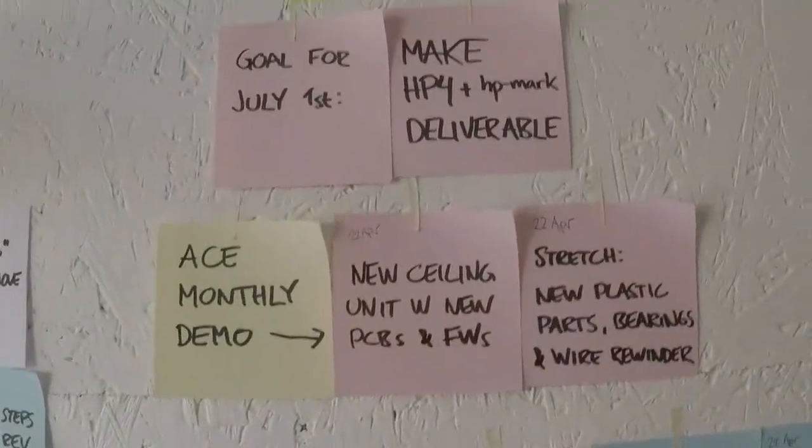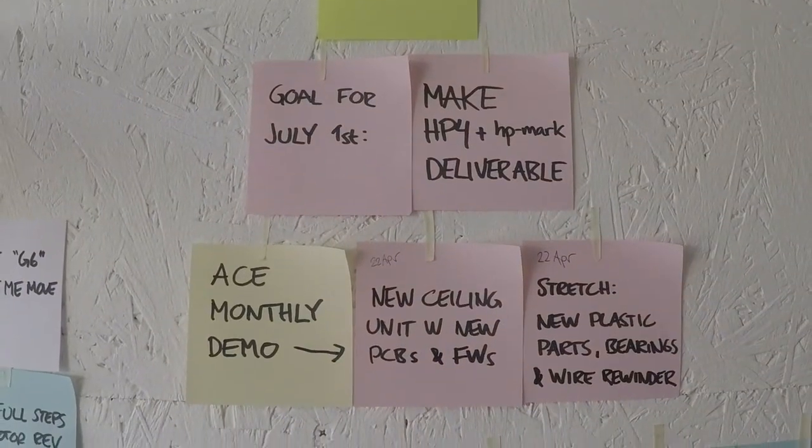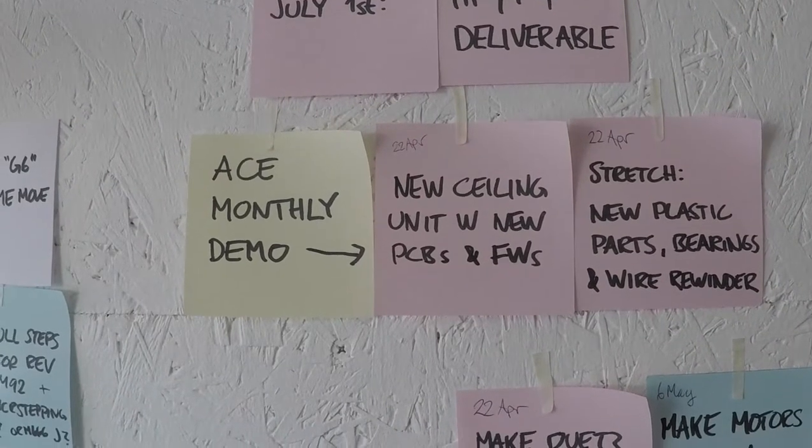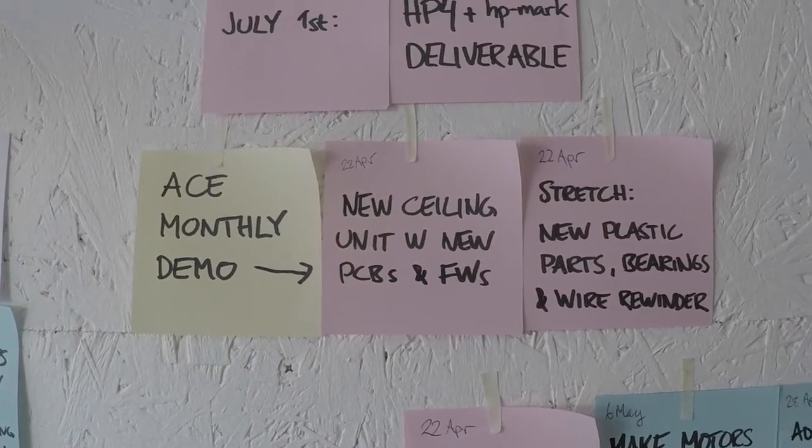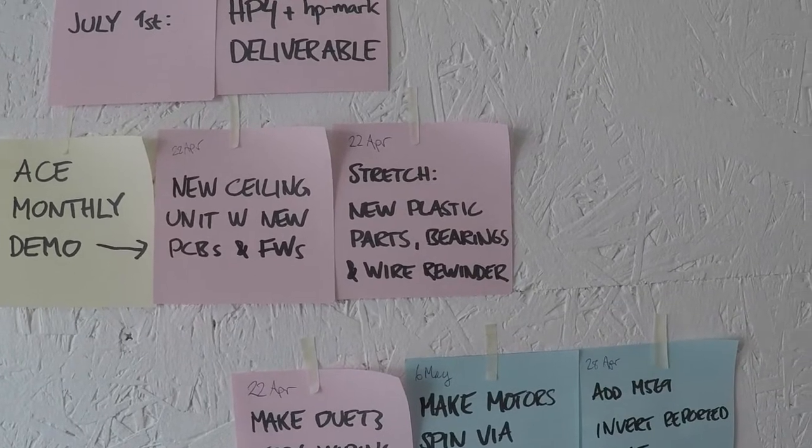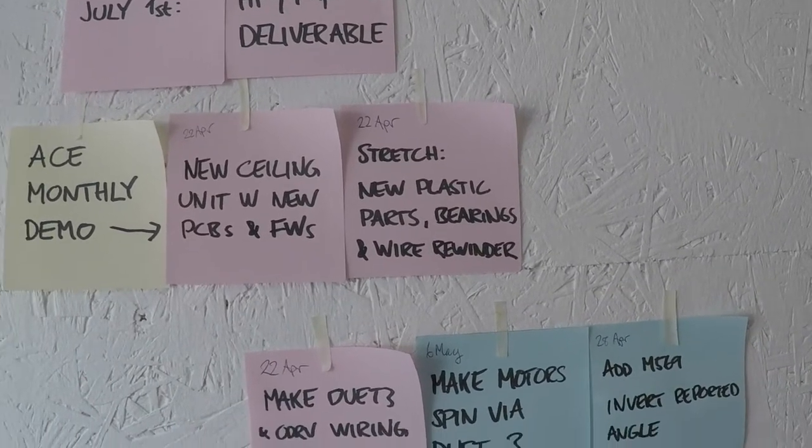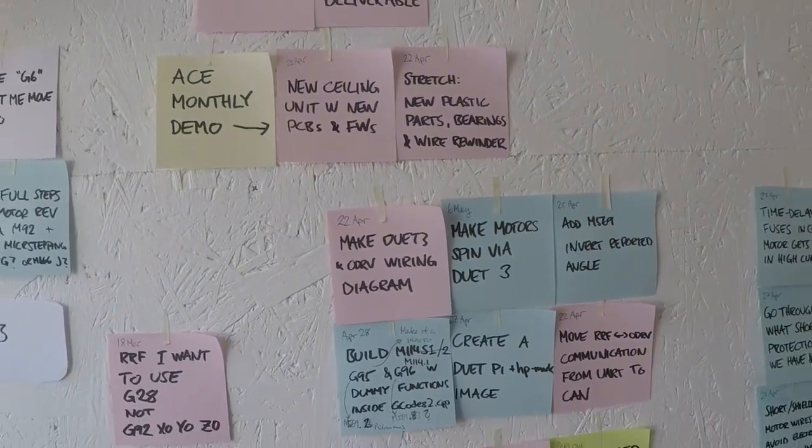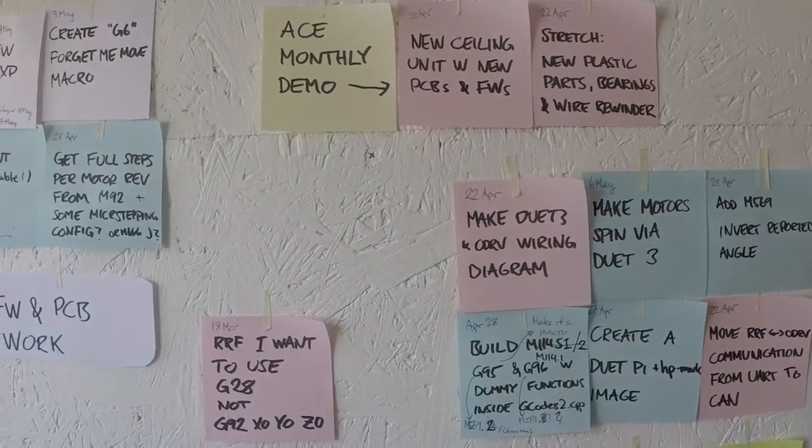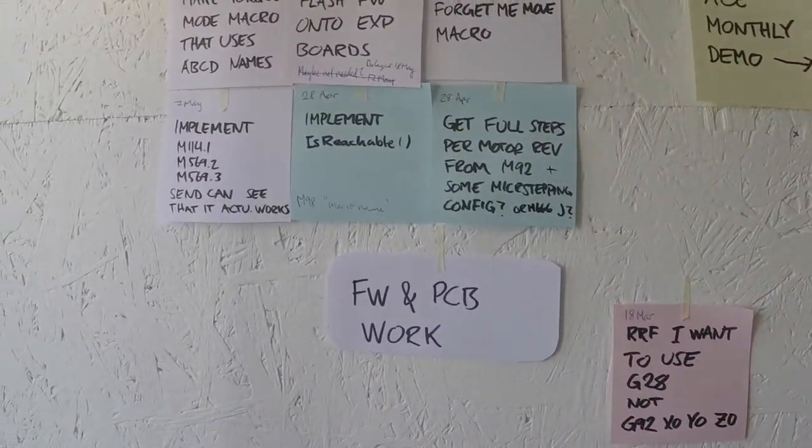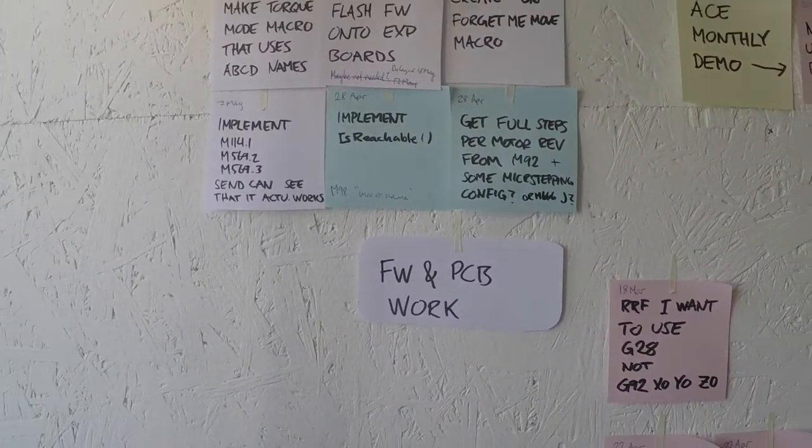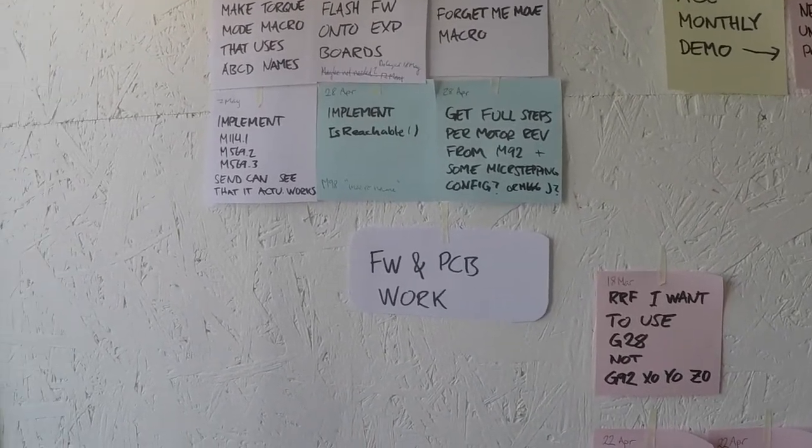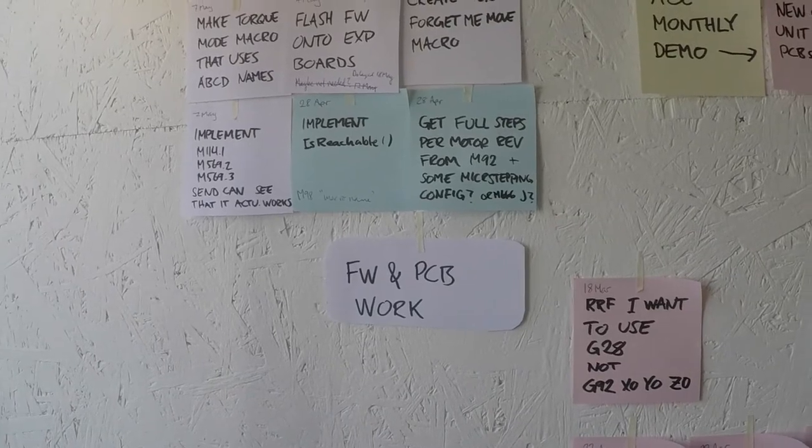My monthly demo was about a new ceiling unit with new PCB circuit boards and firmware, and also a stretch goal of new plastic parts, bearings and wire rewinder. I was very ambitious when I did this. So the tasks were supposed to be these firmware and PCB work tasks. You can see there has been added extra tasks on the top left in addition to the planned tasks that I managed to plan beforehand.